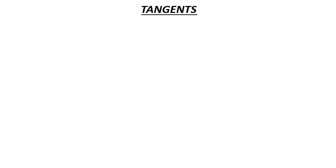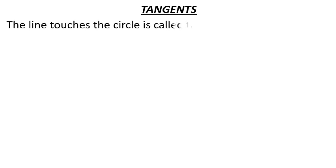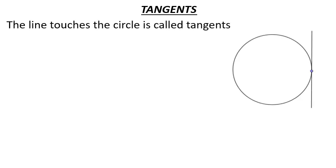First, tangents. What is a tangent? The line that touches the circle is called a tangent. A line is tangent to a circle if it touches the circle at exactly one point.